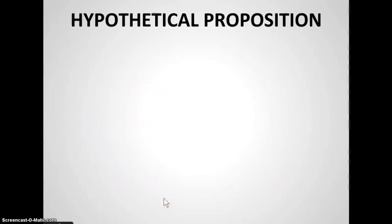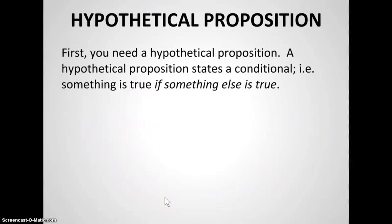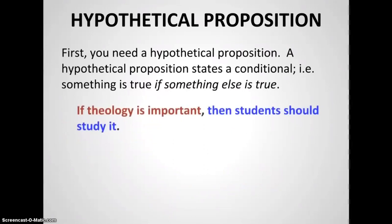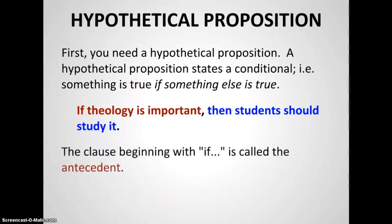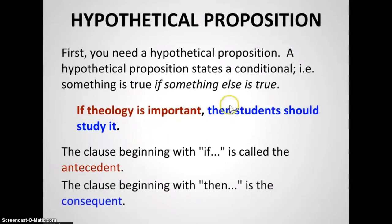At the heart of a hypothetical syllogism is a hypothetical proposition, which simply states a conditional: if something is true, then something else is true. For example: if theology is important, then students should study it. There are two parts to a hypothetical proposition — the first part is called the antecedent, and the second part is called the consequent. We will stick with these common names: the antecedent and the consequent.